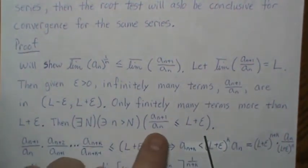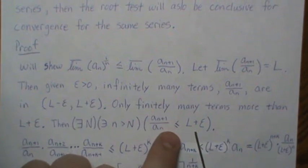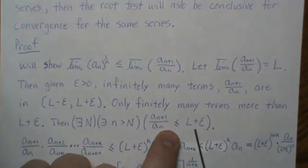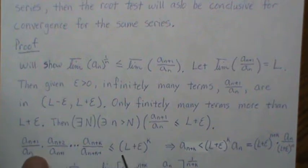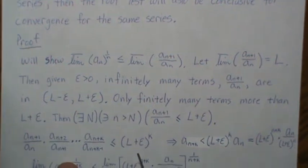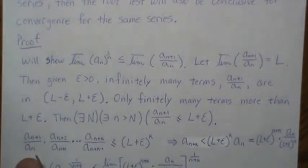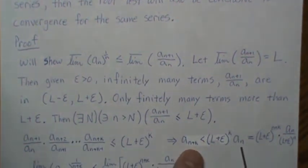We know this ratio is less than L plus epsilon, and so is the next ratio. If we multiply both sides by A_{n+2} / A_{n+1}, and multiply the right side by L plus epsilon again, we get a new inequality. Doing this K times we get a telescoping product — every intermediate term cancels with the previous — leaving only two terms. Multiplying across gives us our inequality.